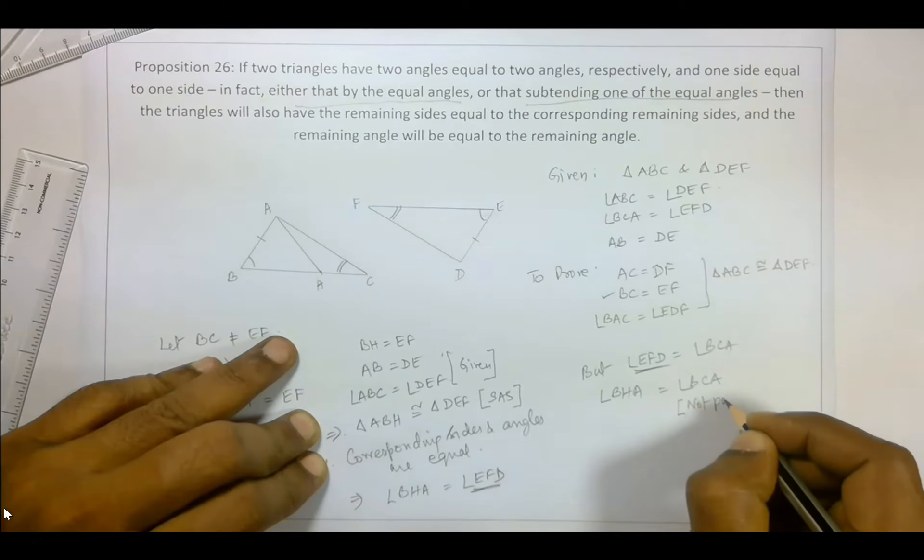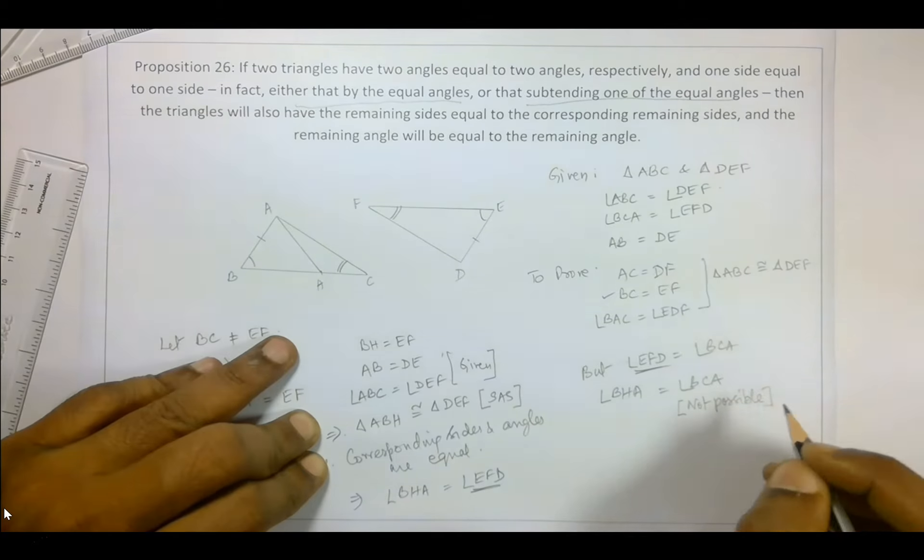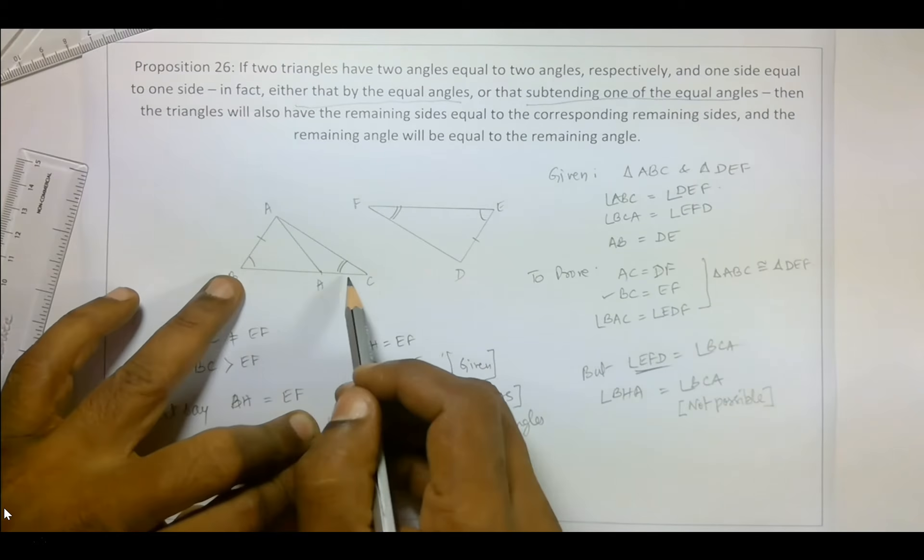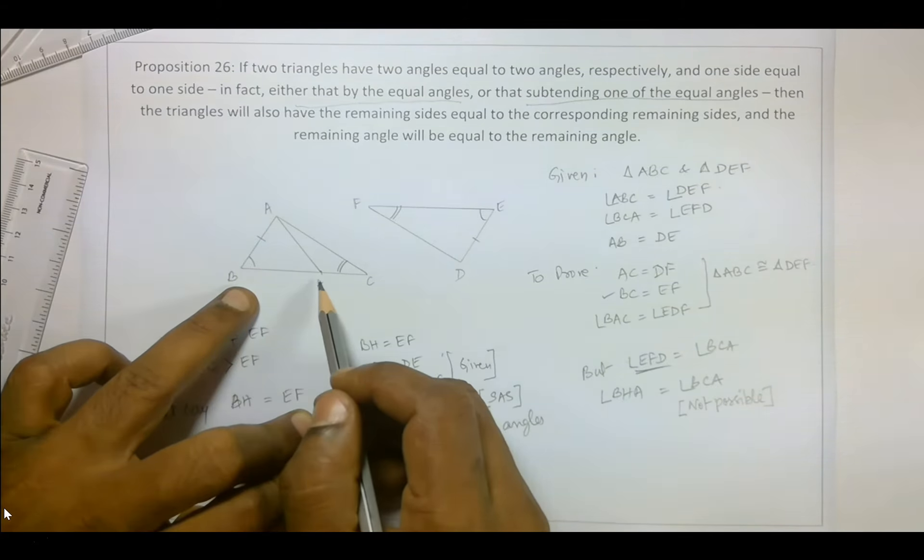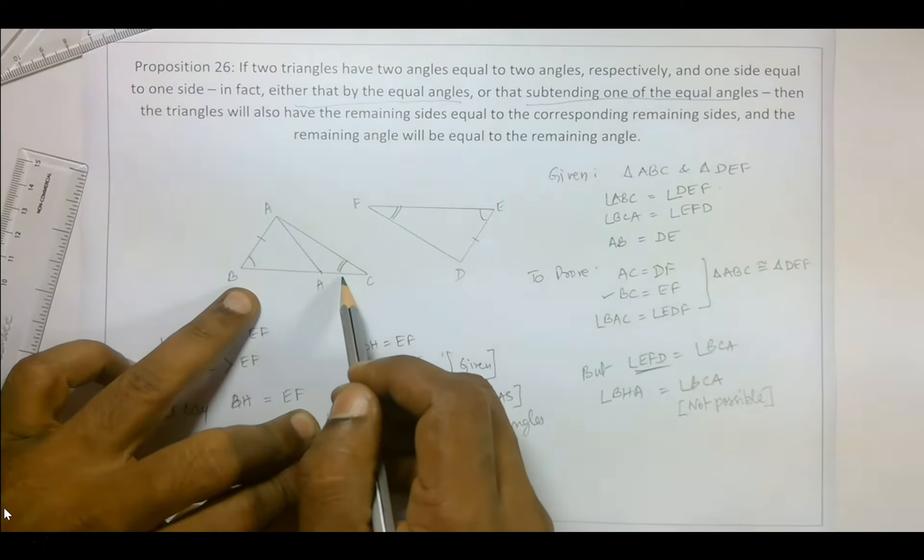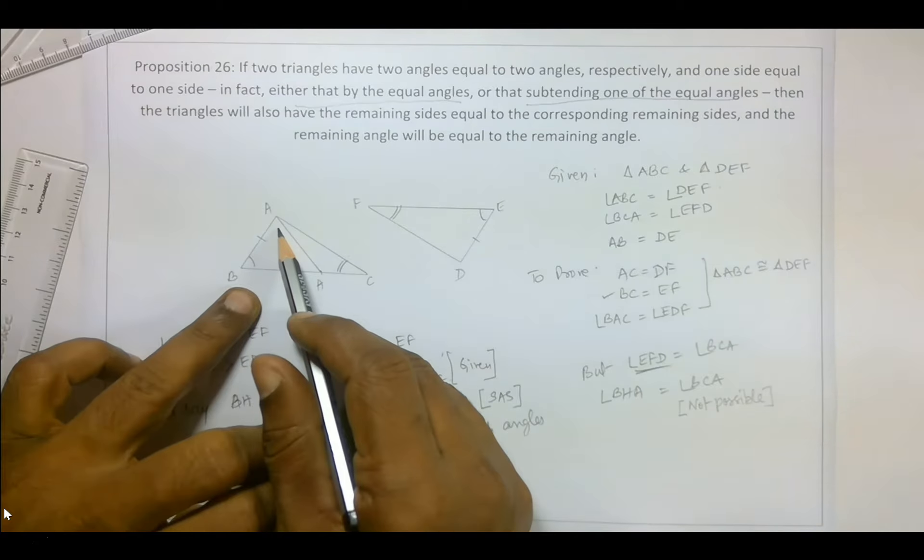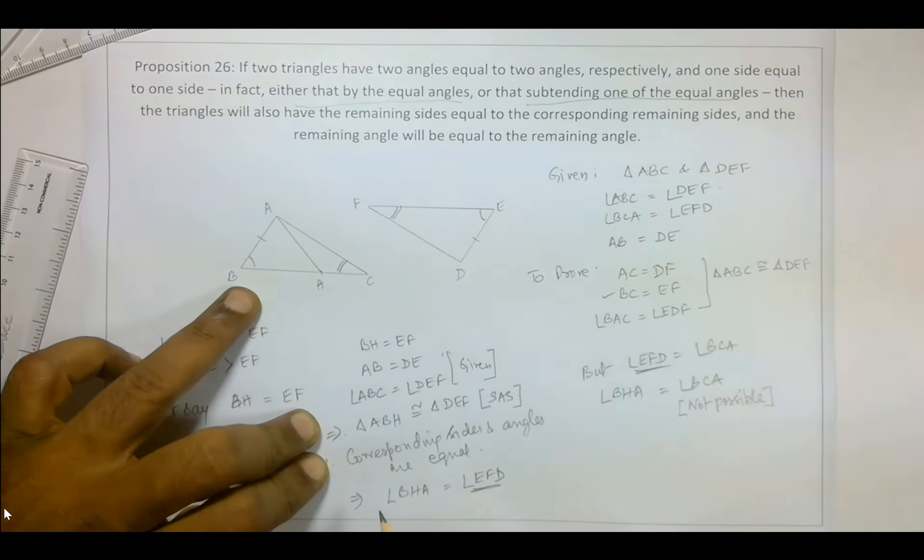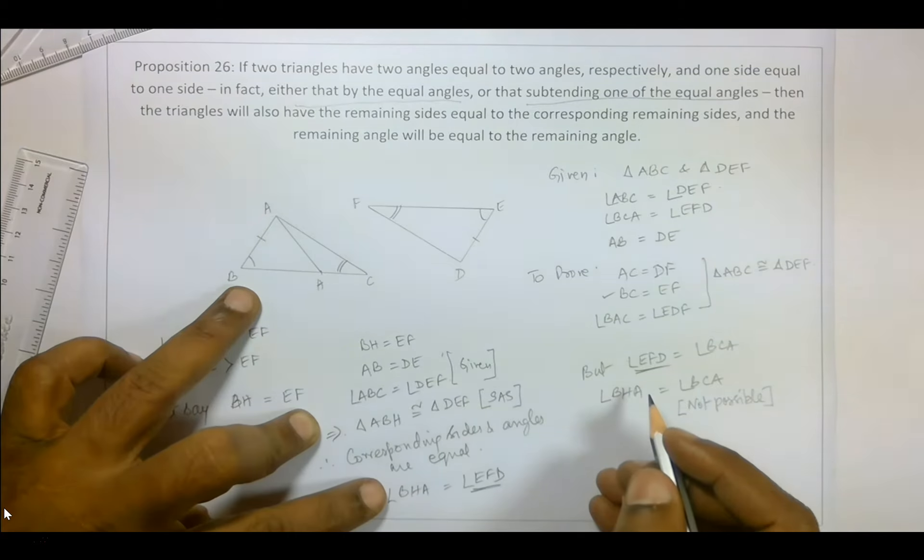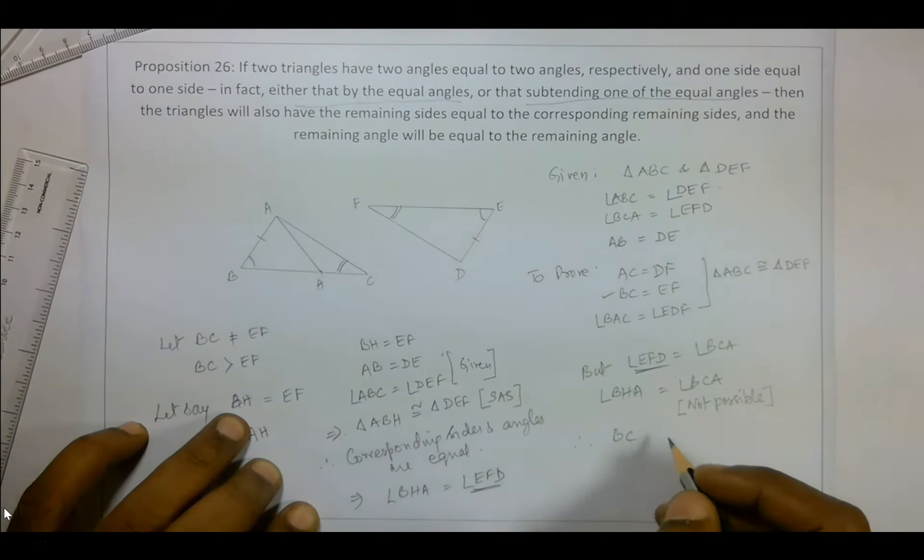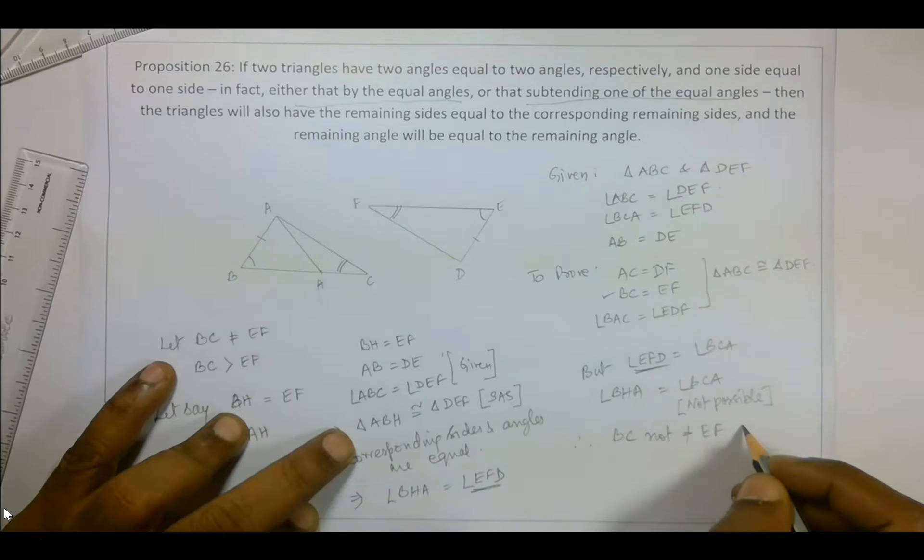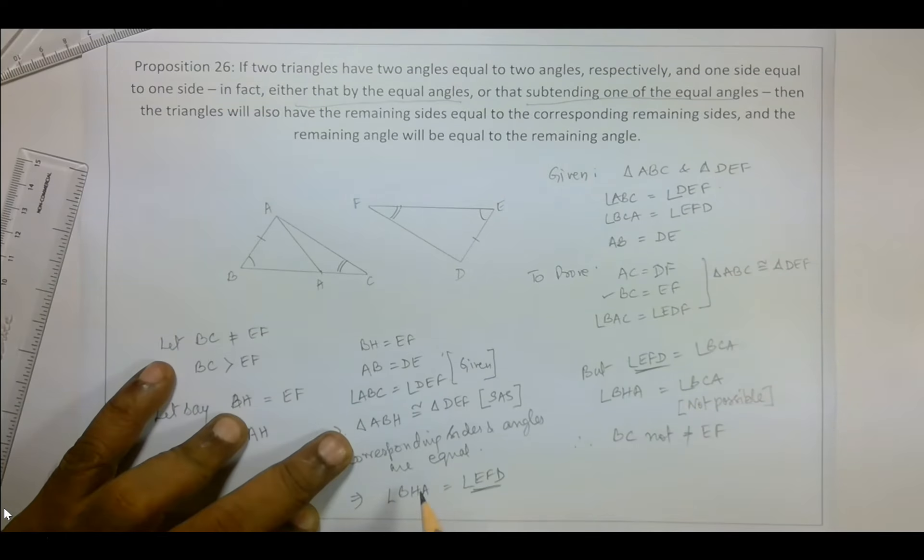Now obviously this is not possible. Why is it not possible? Remember, these are of two different lengths. So two different length sides cannot subtend equal angle. We have already proved this. So therefore BC is not equal to EF, which was the assumption we started off with. So now we have reached a contradiction.